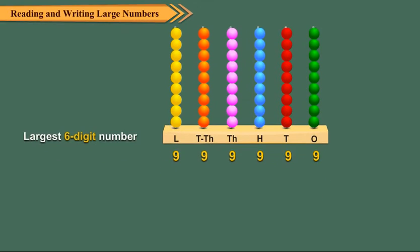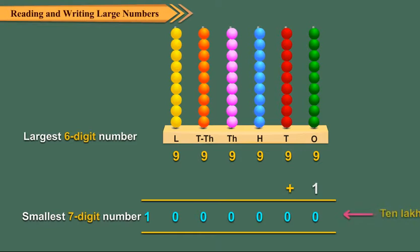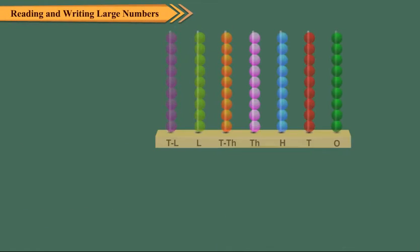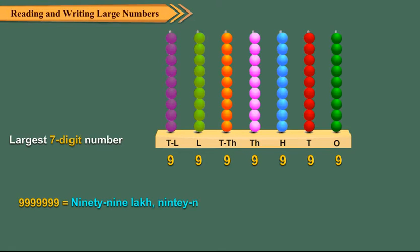When we add 1 to the largest six-digit number, we get the smallest seven-digit number: 10,00,000. The largest seven-digit number is 99,99,999.